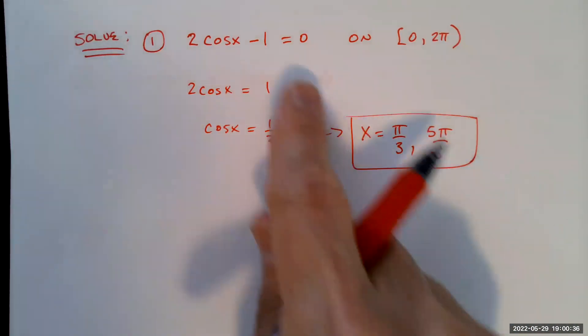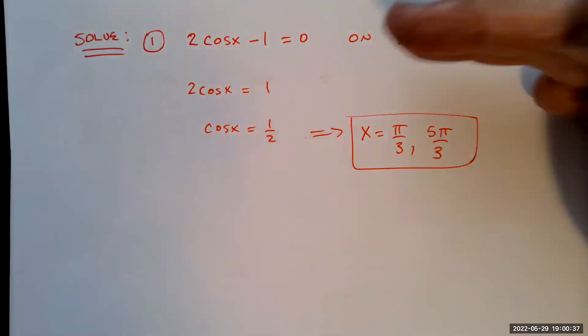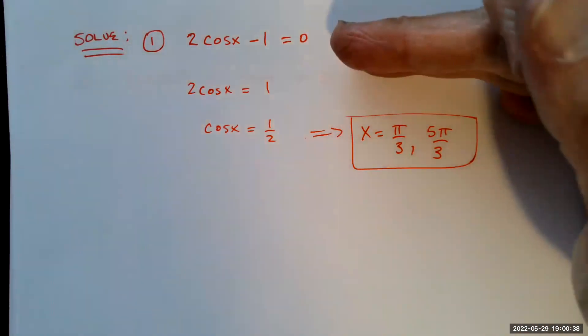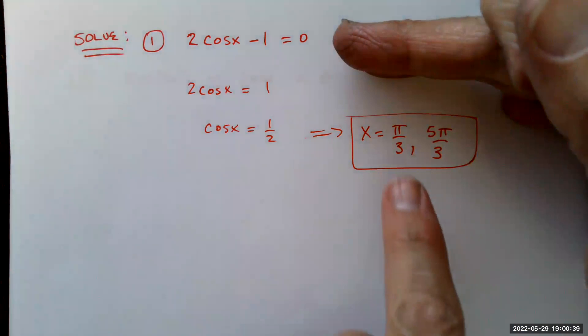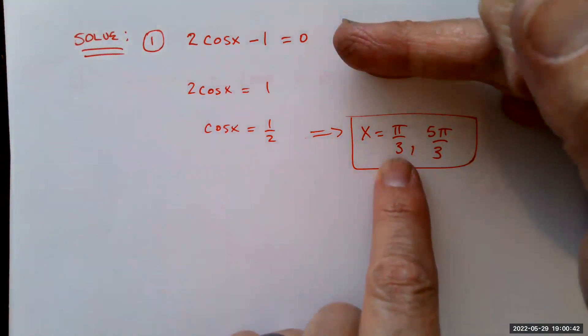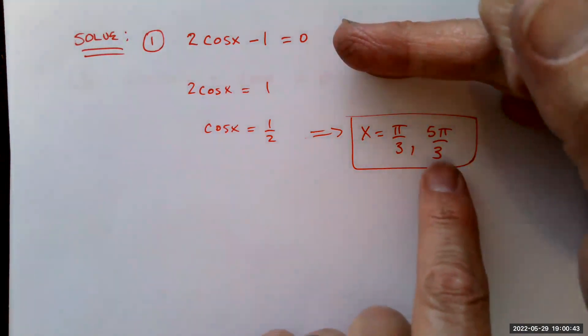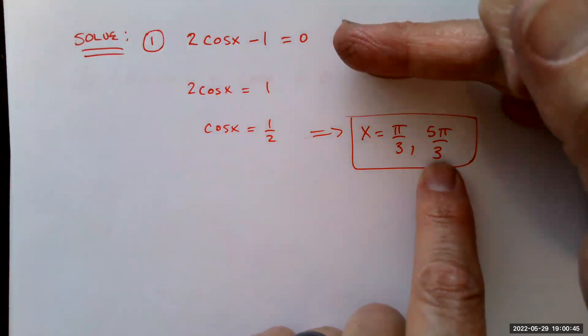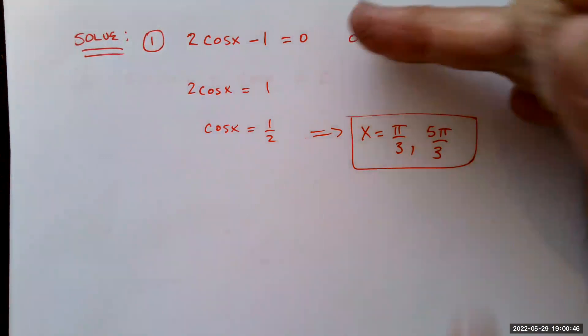In general, if solving without a restricted interval, the solutions would be π/3 plus any multiple of 2π, or 5π/3 plus any multiple of 2π.